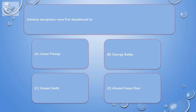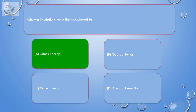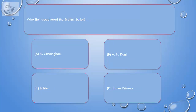Question: Ashokan inscriptions were first deciphered by: A. James Princep, B. George Buhler, C. Vincent Smith, D. Ahmad Hassan Dhani. Correct answer is A. James Princep.